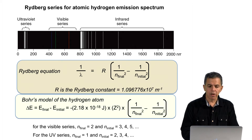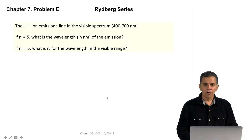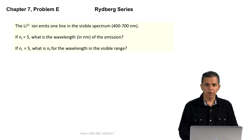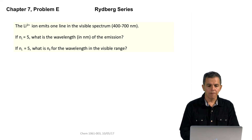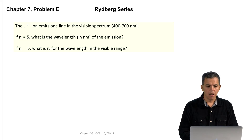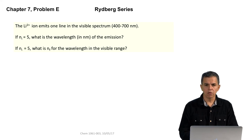One point to remember is that this expression is applicable to any atomic system that has one electron — that's the only condition we need to remember. Now that we have reviewed the Bohr model and the Rydberg series, we are going to apply these concepts to a problem. The problem reads: the lithium 2 plus ion emits one line in the visible spectrum, which refers to the range from 400 to 700 nanometers. If n initial equals 5, what is the wavelength in nanometers of the emission, and what is n final for a wavelength in the visible range?